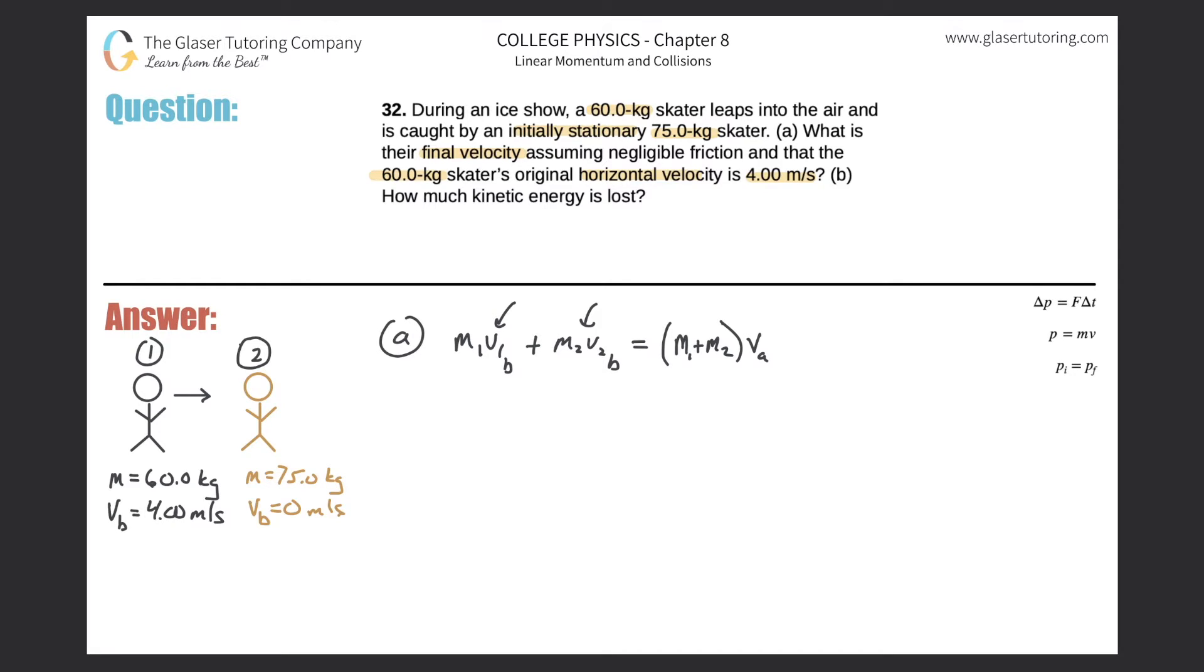So now what I want to do is I want to look and see, do I know all the variables? I know the mass of the first object. I know the initial velocity of that first object. I know the mass of the second object, and I know the velocity of that second object before the collision. I know the masses, and I got to calculate the velocity after. So I can do it because I have one equation with one unknown.